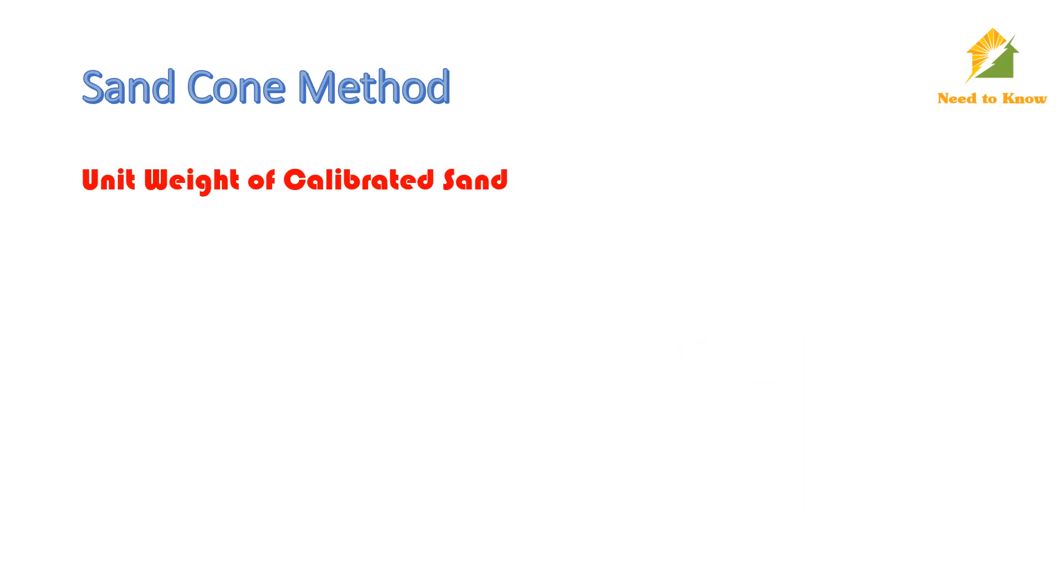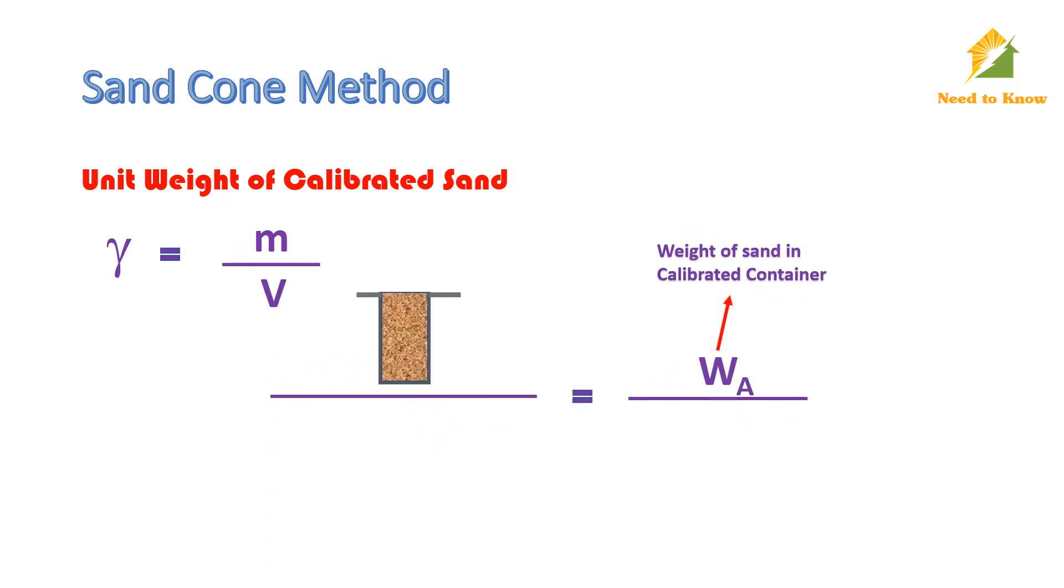Hence, unit weight can be determined by its formula: weight over volume. Here, the weight of sand in the calibrated container is WA and the volume of the calibrated container is VC. From this, we can measure unit weight of calibrated sand.